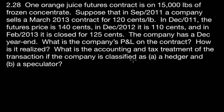One orange juice futures contract is on 15,000 pounds of frozen concentrate. Suppose that in September of 2011, a company sells a March 2013 contract for 120 cents per pound. In December of 2011, the futures price is 140 cents; in December 2012, it is 110 cents; and in February 2013, it is closed for 125 cents. The company has a December 31st year end. What is the company's P&L on the contract, how is it realized, and what is the accounting and tax treatment if the company is classified as a hedger and a speculator?